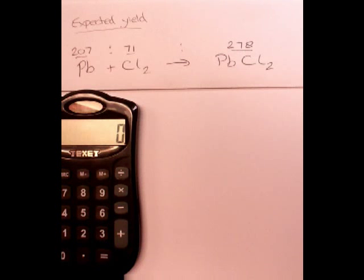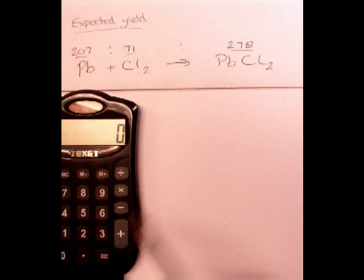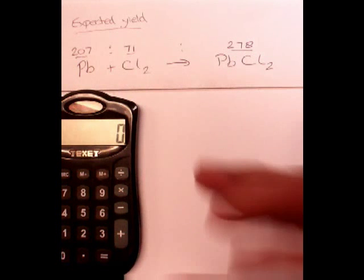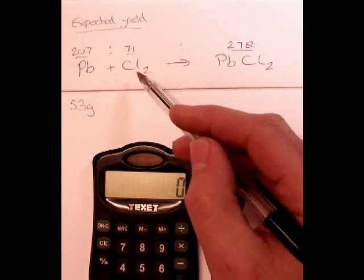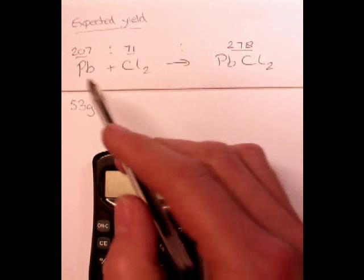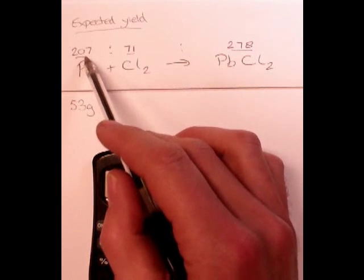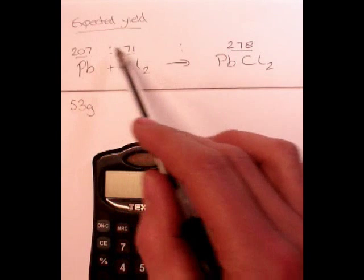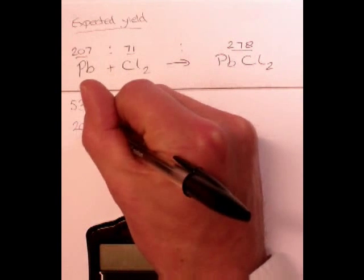We're going to look at the next level of question. A slightly more complicated question. This is looking at expected yield. So, we've got our starting point, we've got our equation, and we've got our relative formula masses. Now, this question is, if we use 53 grams of lead here, how much chlorine would we need to use in the reaction? So, that's the question. We've got our ratio. But, instead of 207, we need 53. So, we've got to convert 207 to 53, but maintain the ratio of these numbers.